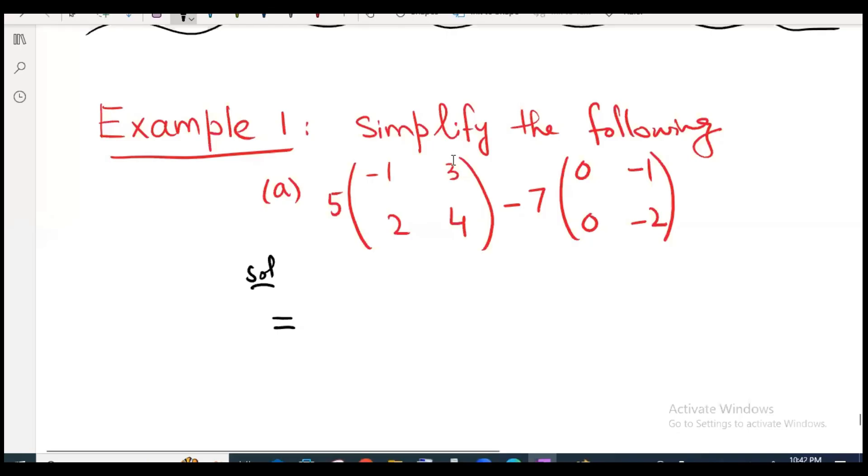This is your example number 1, simplify the following. This has combination of multiplication of scalar and matrices and subtraction. So we will first multiply. Multiply what? 5 with the matrix. This scalar, we will multiply with the matrix elements.